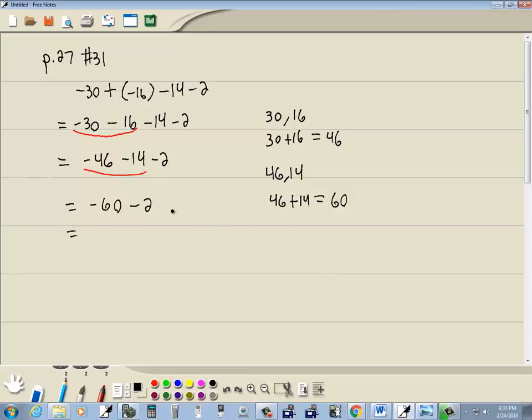So now we've got a negative 60 and a negative 2. Again, same signs, so our steps say to ignore the signs. We've got 60 and 2. Add them together. 60 plus 2 gives us 62. And the sign of our answer is the original sign. They originally both were negative, so this will be a negative 62. And that's our answer.